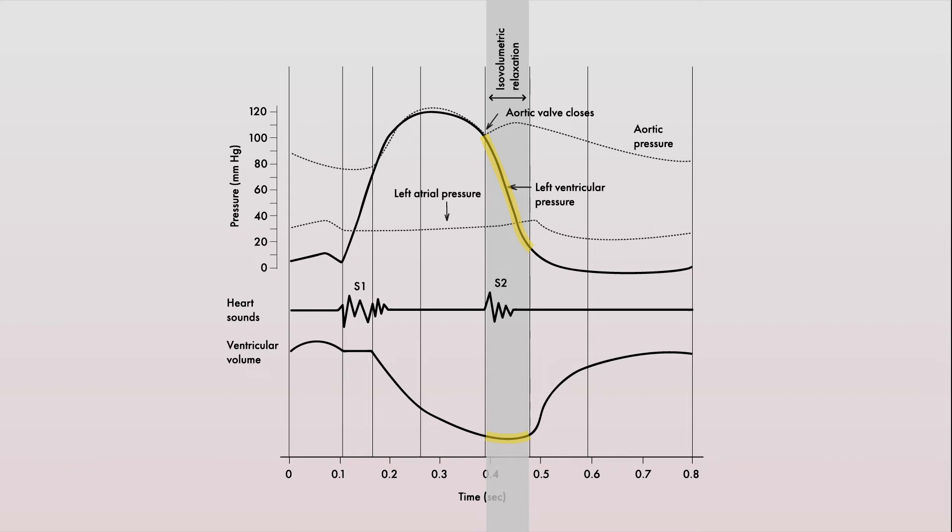This is the first part of diastole called isovolumetric relaxation and is marked by the period between aortic valve closure and mitral valve opening. It's called isovolumetric relaxation because there is no change in the volume of blood within the ventricles during this part of diastole.